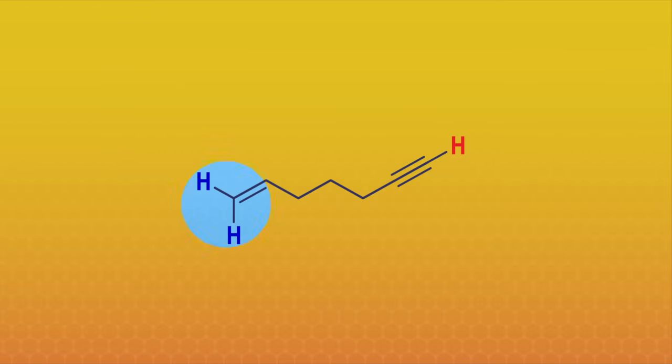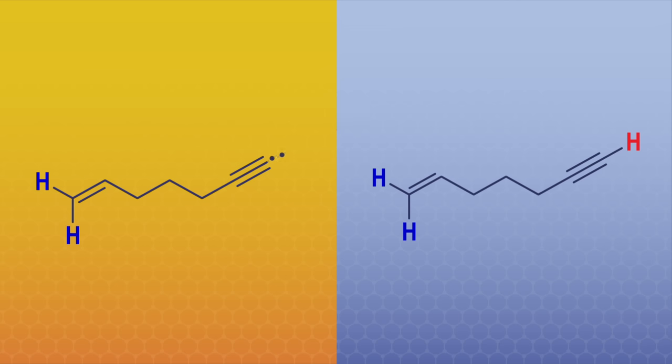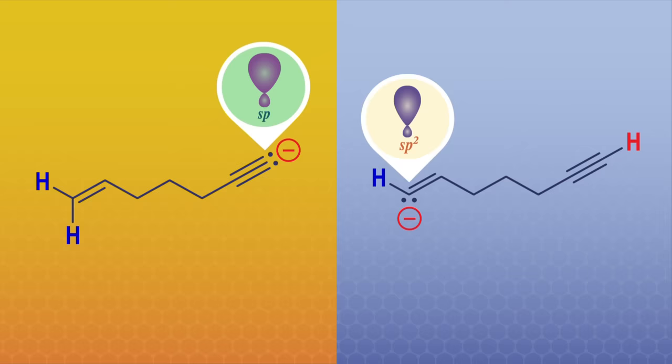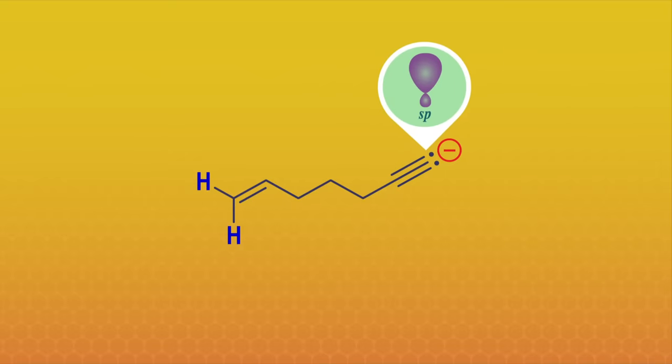We can see the importance of the S-character of hybrid orbitals by looking at the acidity of different protons within a molecule. For example, this molecule has an alkene at one end, with the protons highlighted in blue, and an alkyne at the other with a proton highlighted in red. So which of these two protons is more acidic? By pulling off a proton from each end of the molecule, we can create two different conjugate bases with a negative charge in different places. Using what we know about hybrid orbitals, the alkene end has an sp2 hybridized carbon, and the alkyne end has an sp hybridized carbon. That means the alkyne end has more S-character and can stabilize the negative charge better, so that conjugate base is more stable and that proton is more acidic.